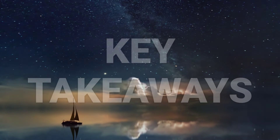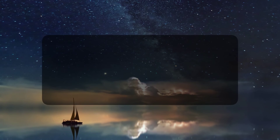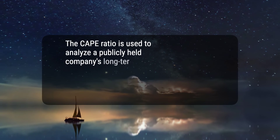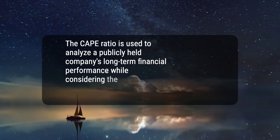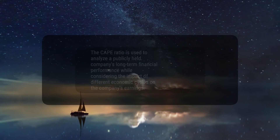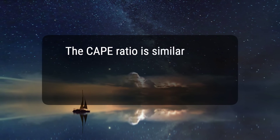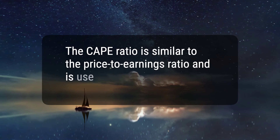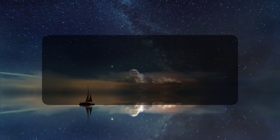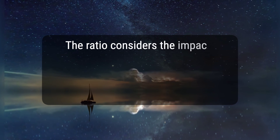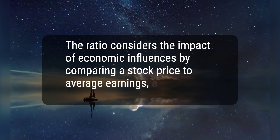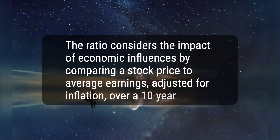Here are three key takeaways. First, the CAPE ratio is used to analyze a publicly held company's long-term financial performance while considering the impact of different economic cycles on the company's earnings. Second, the CAPE ratio is similar to the price-to-earnings ratio and is used to determine whether a stock is over or undervalued. Third, the ratio considers the impact of economic influences by comparing a stock price to average earnings, adjusted for inflation, over a 10-year period.